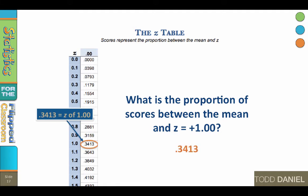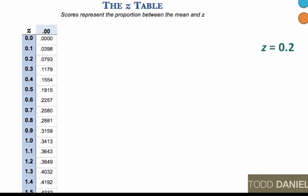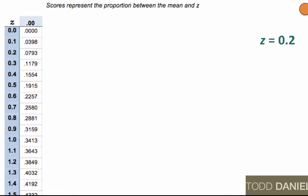See how that works? Let's try some other examples. What is the proportion of scores between the mean and a z of 0.2? It is 0.0793.